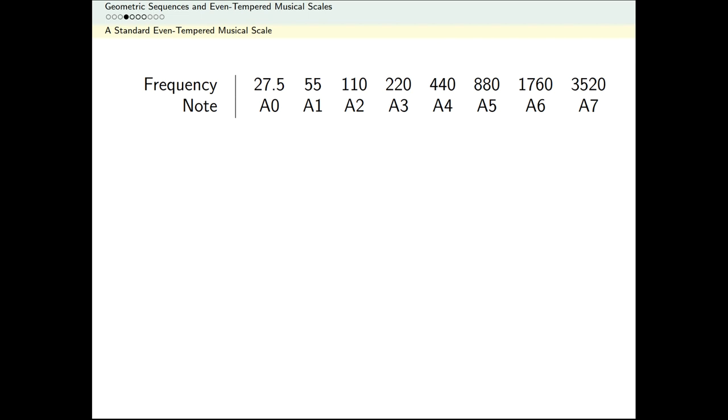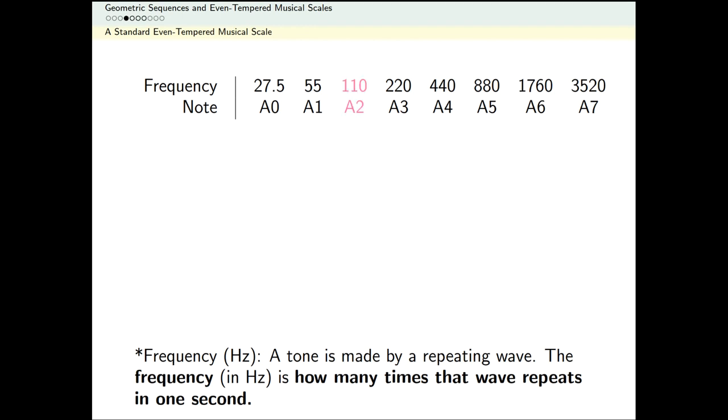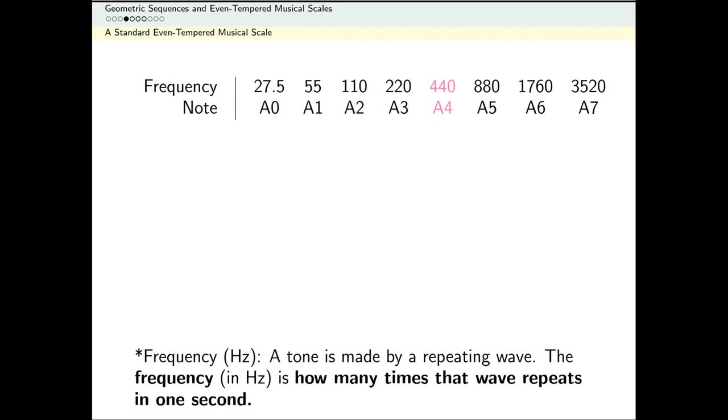Musical scales give us a natural example of geometric sequences. Frequency is a way of measuring how high or low a note is. This is what 110 Hz sounds like, 220 Hz, 440 Hz.